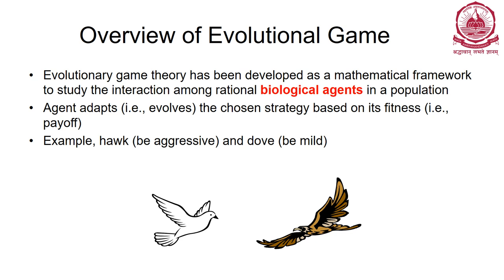Evolutionary game theory has been developed as a mathematical framework to study the interaction among rational biological agents in a population. Agents evolve or adapt to choose a strategy based on fitness, which is analogous to payoffs. A classical example is the interaction between a hawk and a dove for food. Hawks are aggressive and doves are mild, so when they interact the dove gives up food and the hawk gets it all.